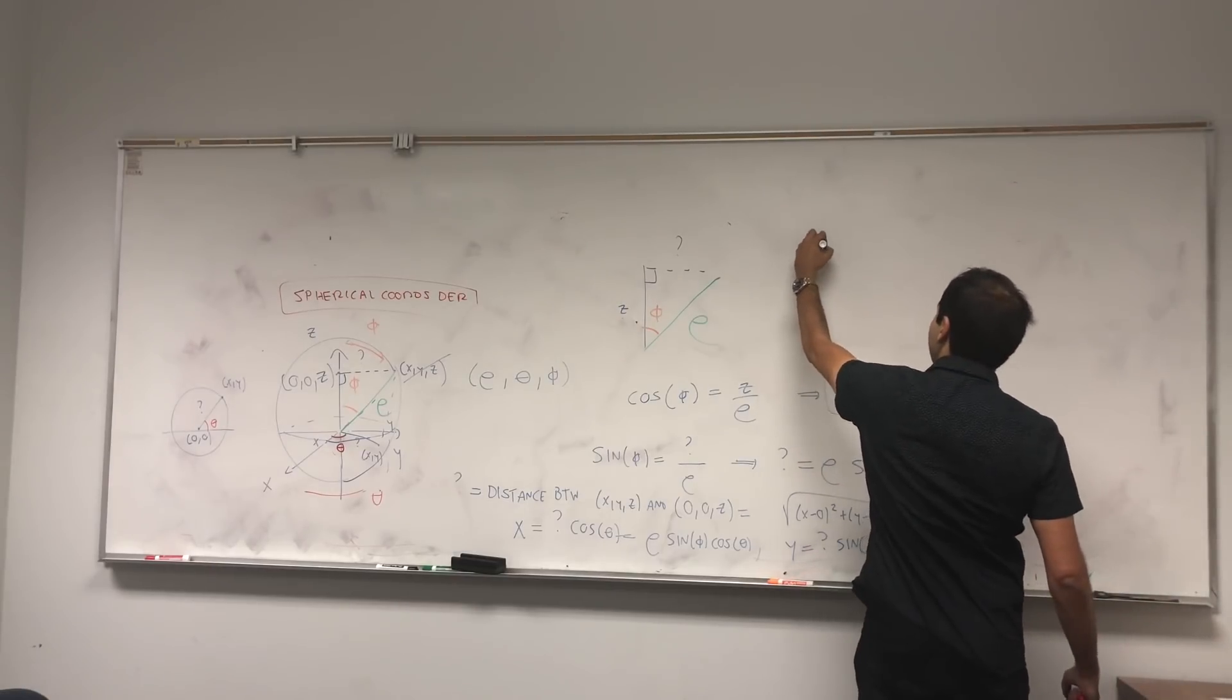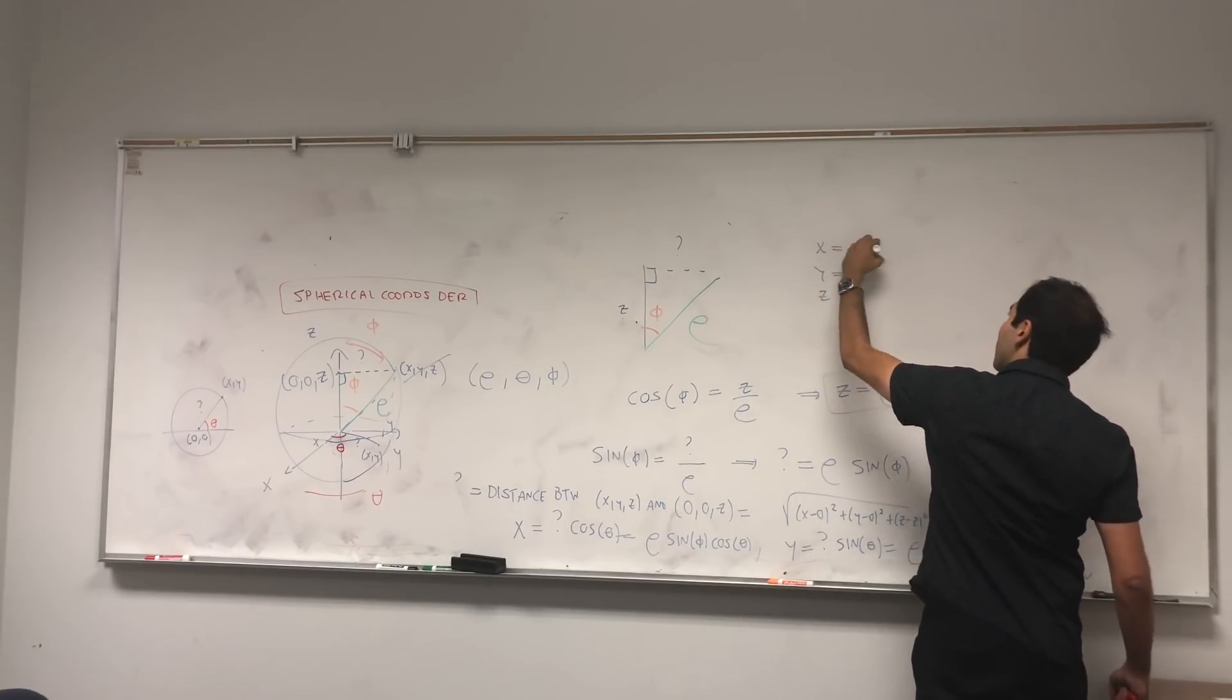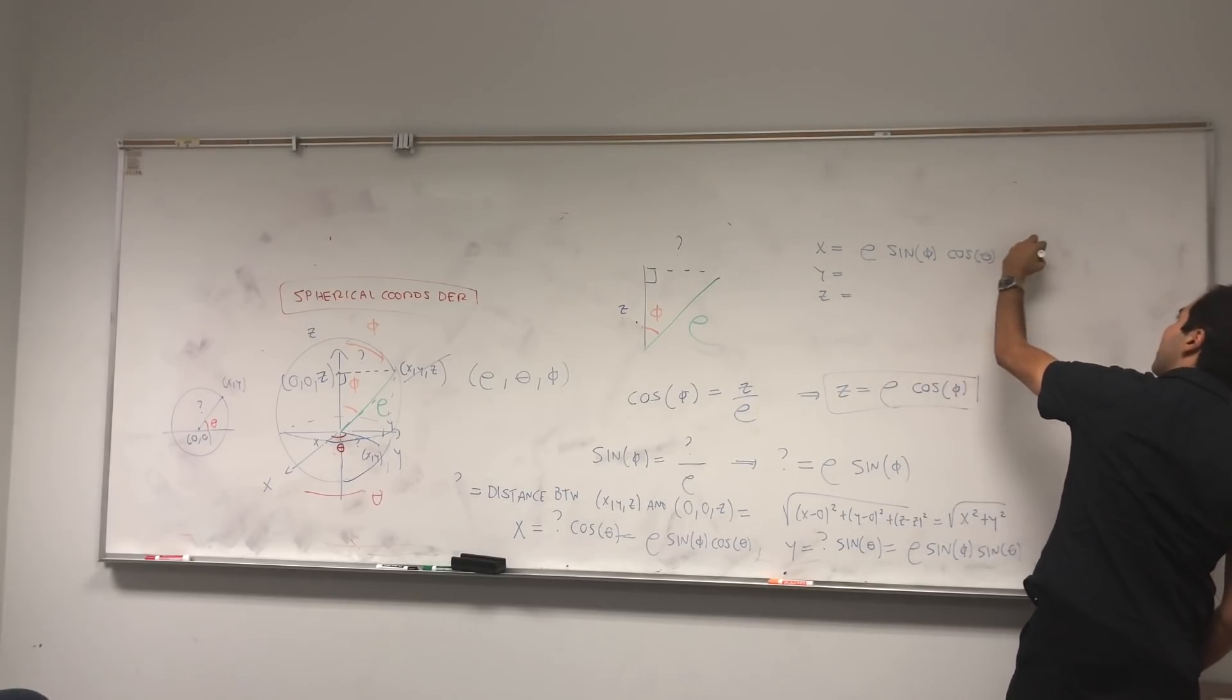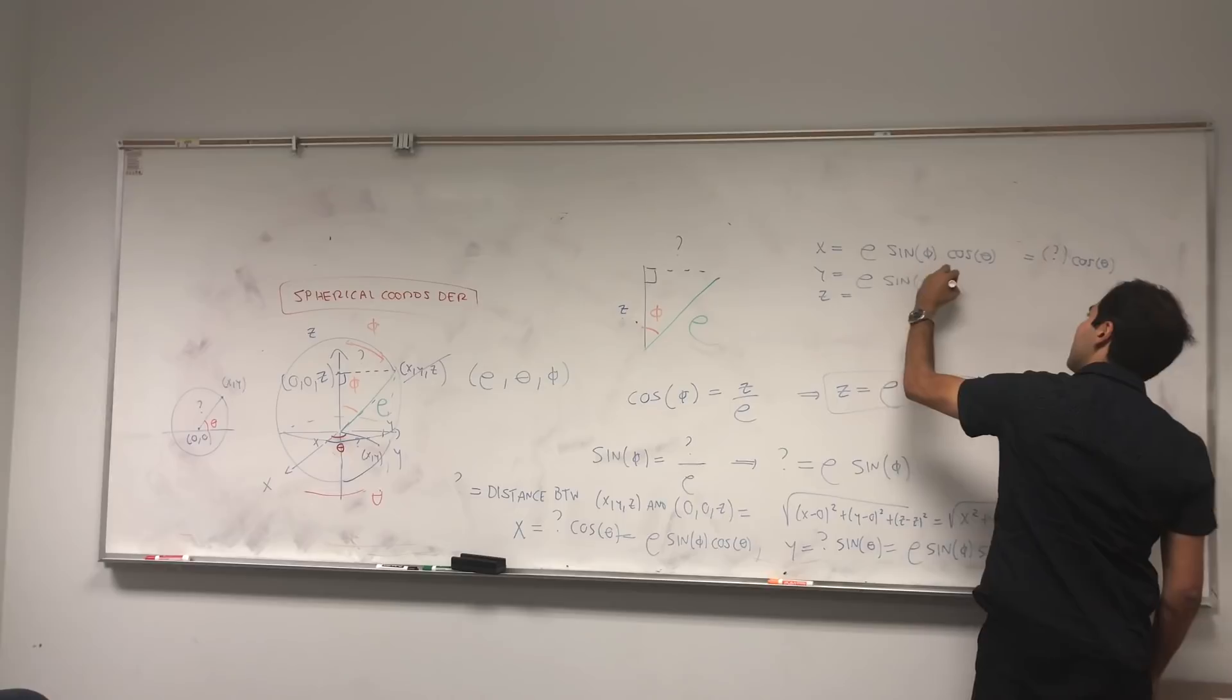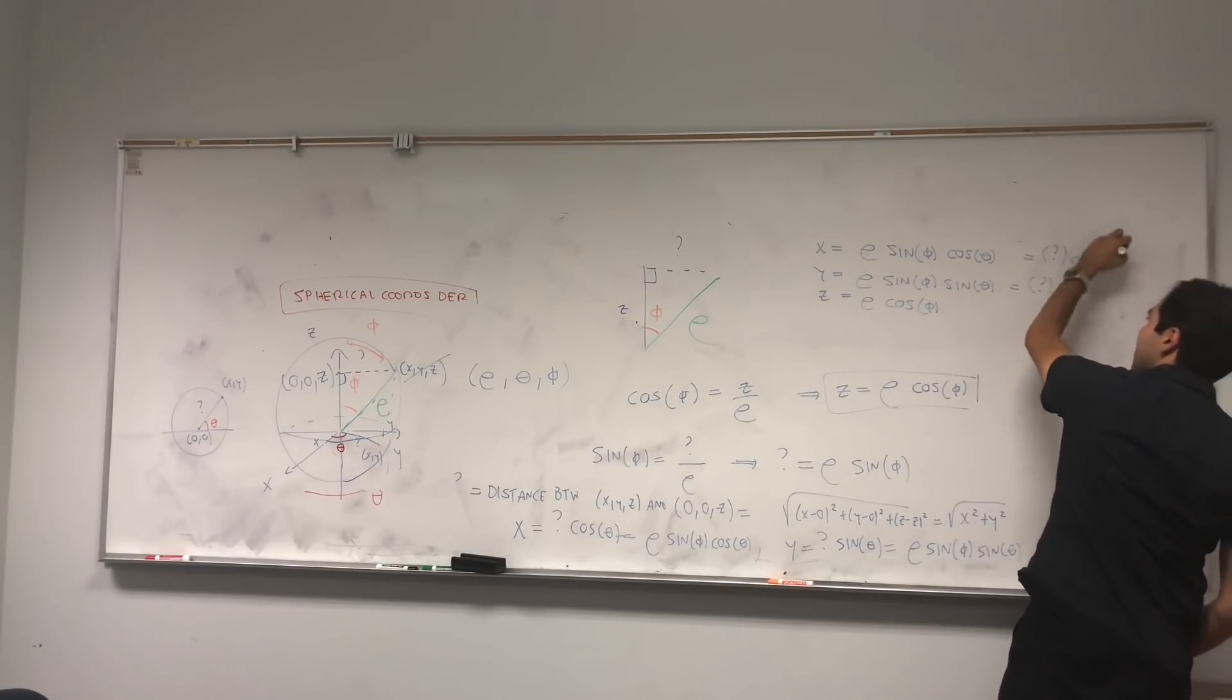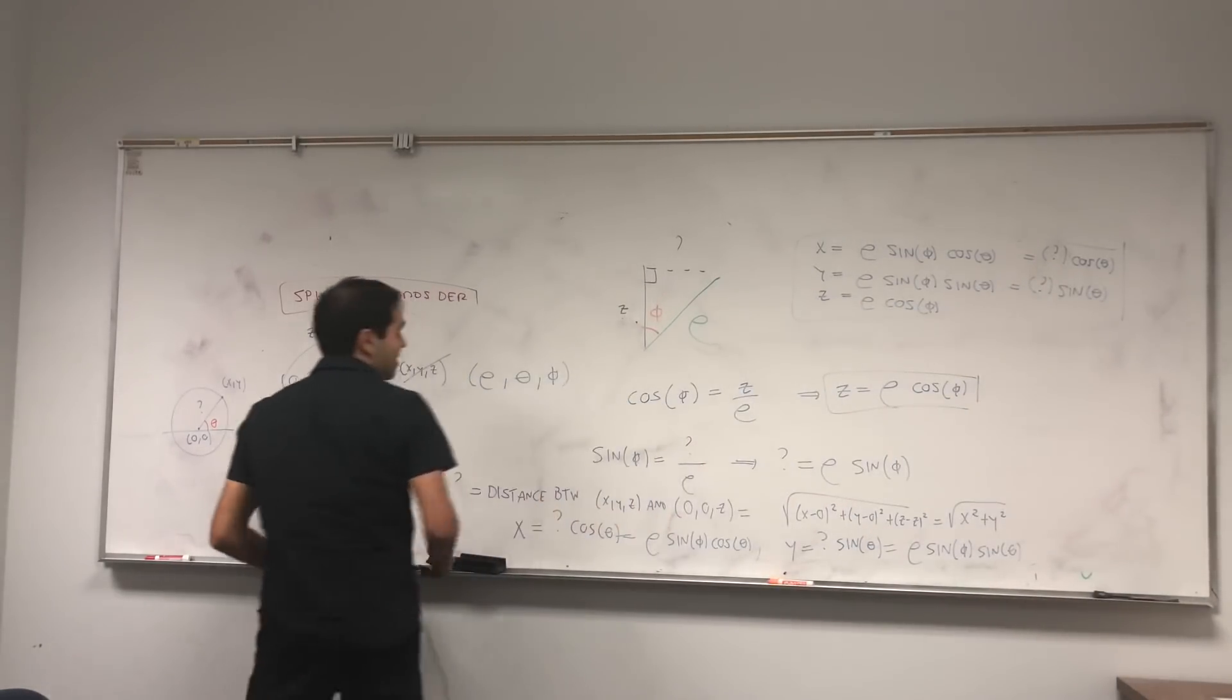And lastly, you have our equations x, y, and z. X is rho sine phi cosine of theta, which again, you should just think of a question mark cosine of theta. That's question mark sine of theta. And lastly, rho cosine of phi. Ta-da!